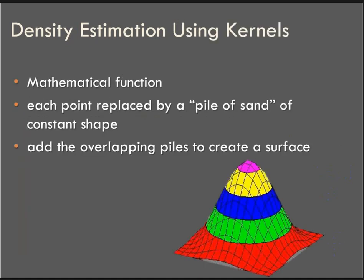So density estimation is done using something called a kernel and the tool you're going to be using is called a kernel density estimation, a KDE. It's a mathematical function that replaces each point location with a 3D model that I like to think of and other people have described as a pile of sand. And the sand can have different spreads and different shapes, but they're constant shapes when you're running the tool.